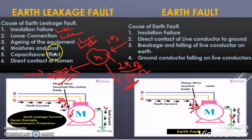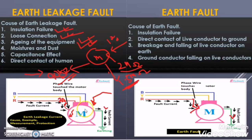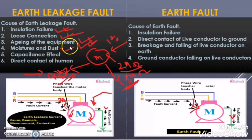The fourth condition is dust or moisture. Suppose the motor is new, everything is perfect — there is no loose connection, there is no insulation failure. But the motor is in an atmosphere with too much moisture. So the moisture will accumulate in the motor winding and it will reduce the insulation of the motor winding. When we run the motor, it will spill some amount of current to the body of the motor. So moisture and dust are also reasons for earth leakage fault.